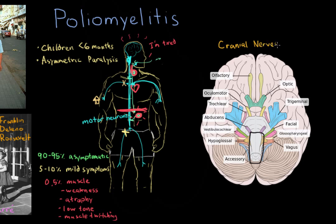The cranial nerves that may be affected include the glossopharyngeal nerve (cranial nerve 9), the vagus nerve (cranial nerve 10), the accessory nerve (cranial nerve 11), and the hypoglossal nerve (cranial nerve 12). These are motor neurons that can also be damaged by the virus.